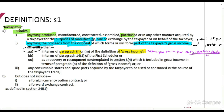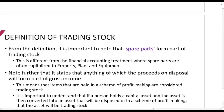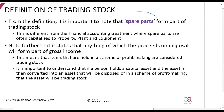They also tell you that any consumable stores and spare parts are included in trading stock. Spare parts in financial accounting are quite often capitalized, but here they are trading stock. However, it does not include a foreign currency option contract or a forward exchange contract. Please note: spare parts form part of your trading stock.